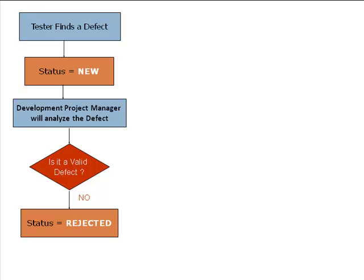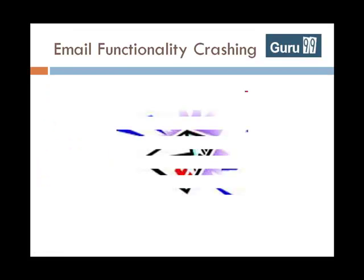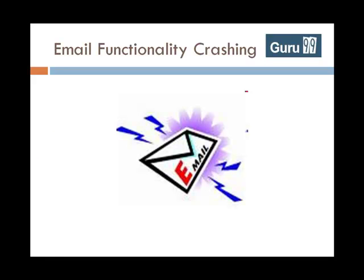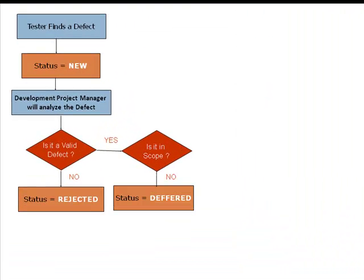If not rejected, the defect is checked whether it is in scope. Suppose you find a problem with the email functionality, but it is not part of the current release. Such defects are postponed.